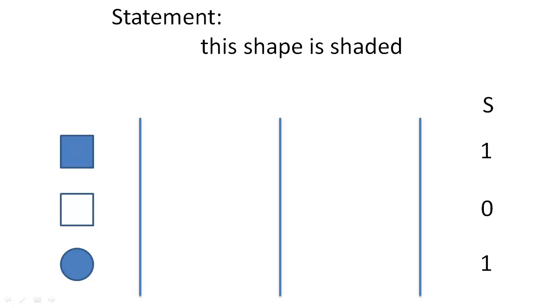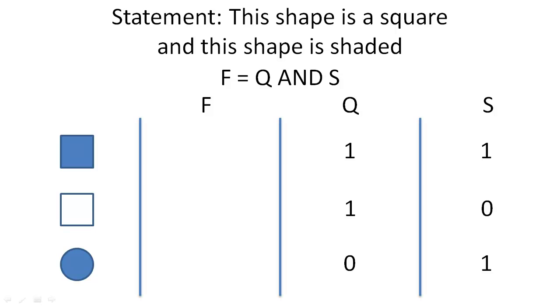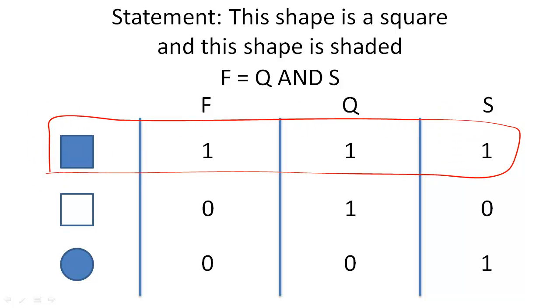We can combine predicates and create new statements. For example, this statement will be true only when both smaller predicates are true. In this situation, we represent the new composite statement with another Boolean variable.